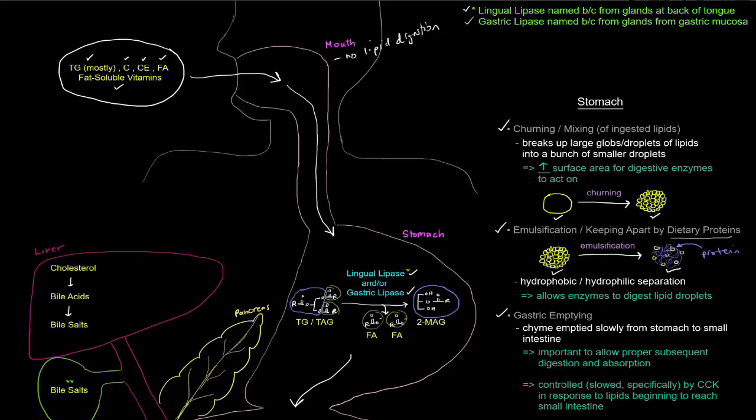So the gastric emptying is actually controlled. It's actually slowed down specifically by cholecystokinin or CCK in response to lipids beginning to reach the small intestine, which is next.